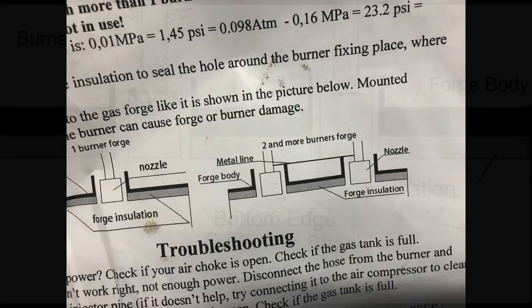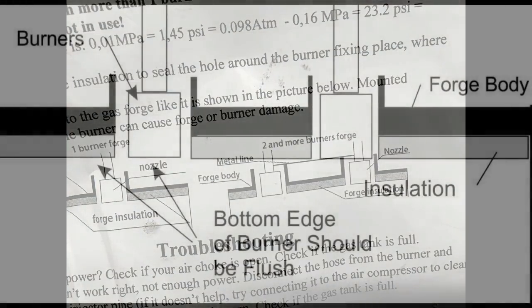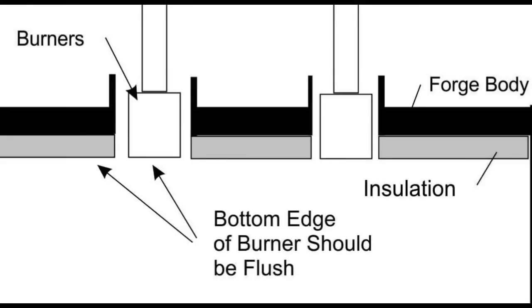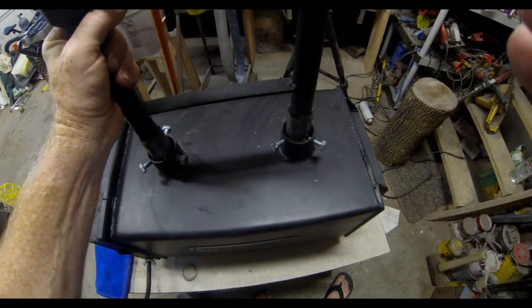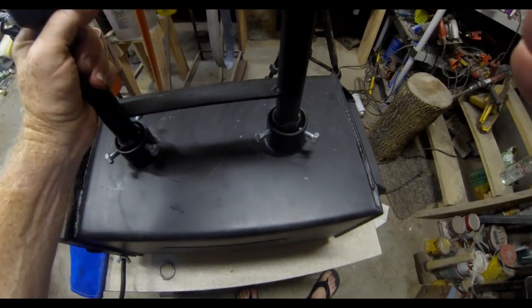The instruction sheet says to mount the burners flush to the bottom edge. Now, the correct mounting position for this particular forge, it has a crossbar that runs from burner to burner.